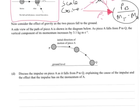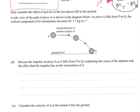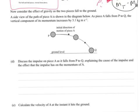Now consider the effect of gravity as two pieces fall to the ground. A side view of the path of piece A is shown in the diagram below. Piece A falls from P to Q. The vertical component increases by 3.1 kg·m per second. Discuss the impulse on piece A as it falls from P to Q. Explain the cause of the impulse and the effect that the impulse has on the momentum of A.